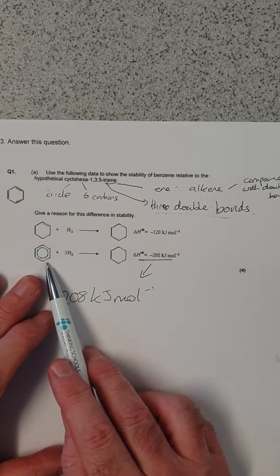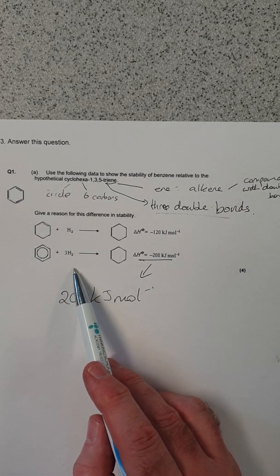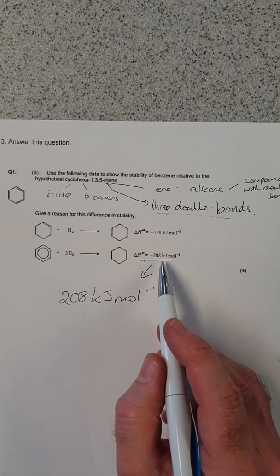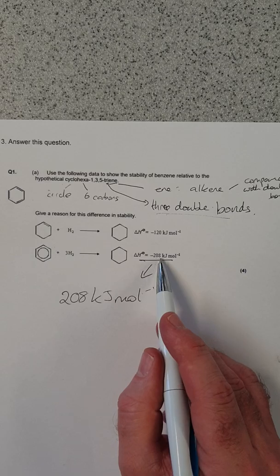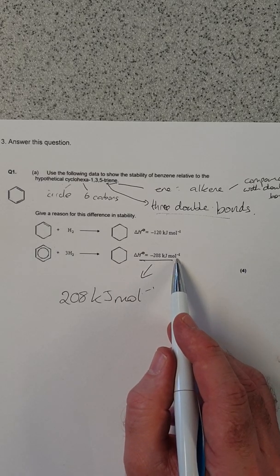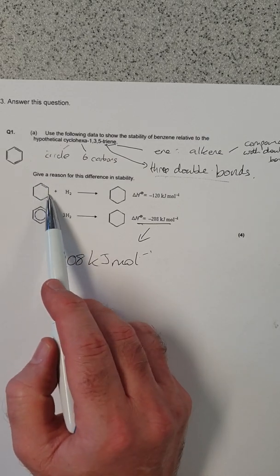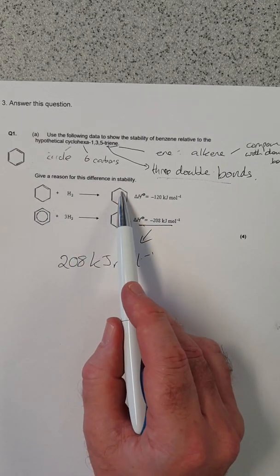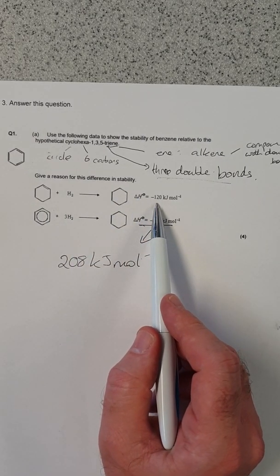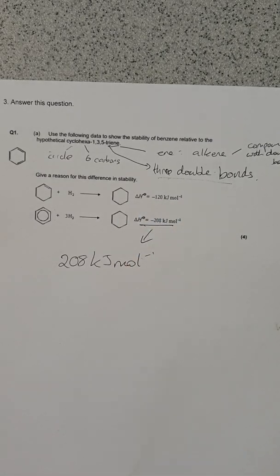Now, when benzene has a reaction with hydrogen, it releases energy. It's an exothermic reaction. And this tells us how much energy is released, 208,000 joules or 208 kilojoules per mole. In the case of this molecule, where there is one double bond, when that's reacted with hydrogen, so the double bond is lost, then we have, again, it's an exothermic reaction, then we have minus 120 kilojoules per mole released.